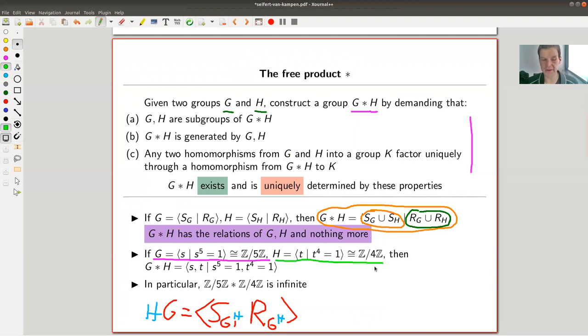So what is Z mod 5 star Z mod 4? It's this infinite group given by this presentation here. This really just means you have two generators S and T, and they satisfy still the relations they satisfied before, S to the fifth, T to the fourth equals one. Both of them separately, but there is no cross relation, there's no relation involving S and T, not a single one.